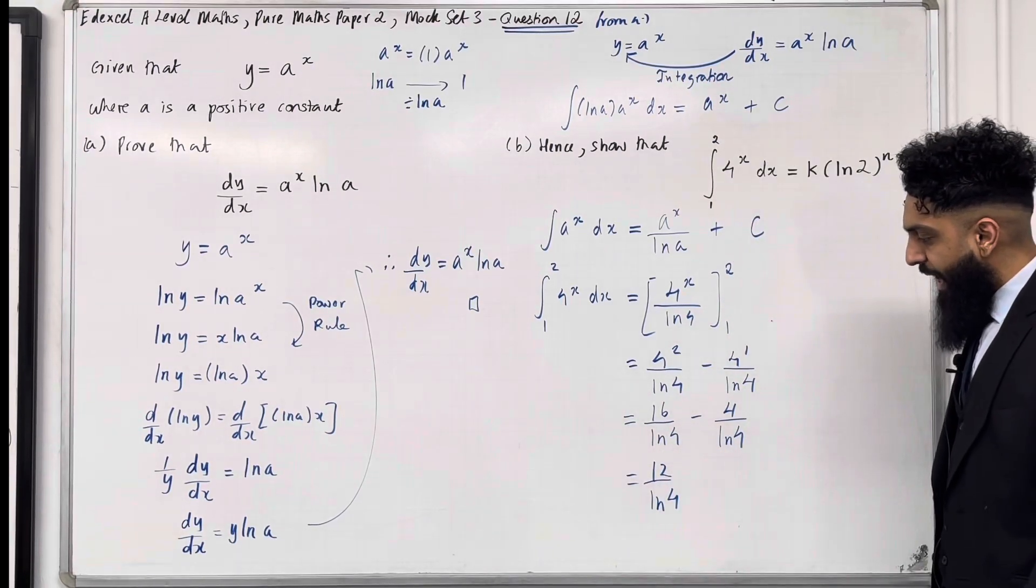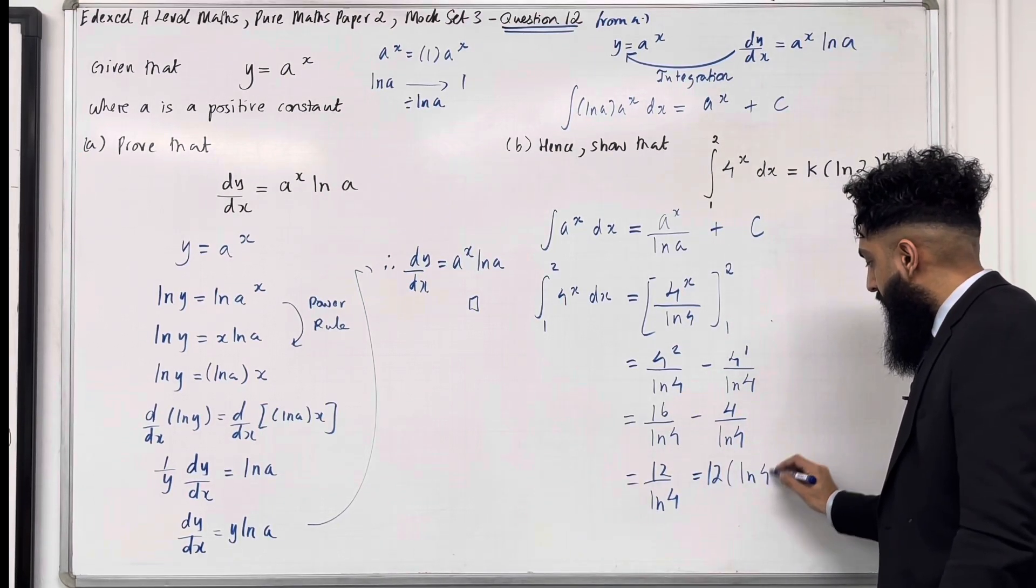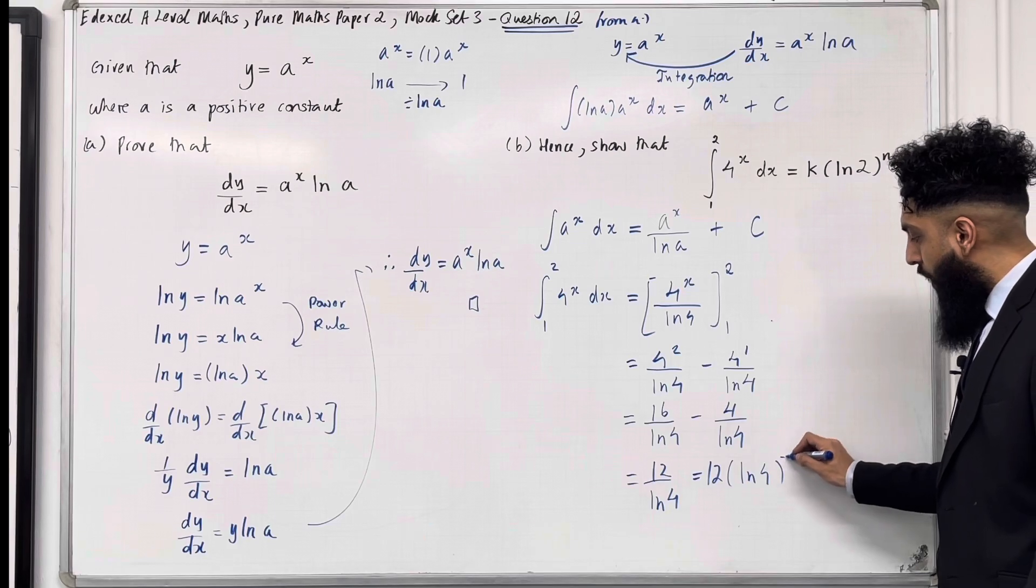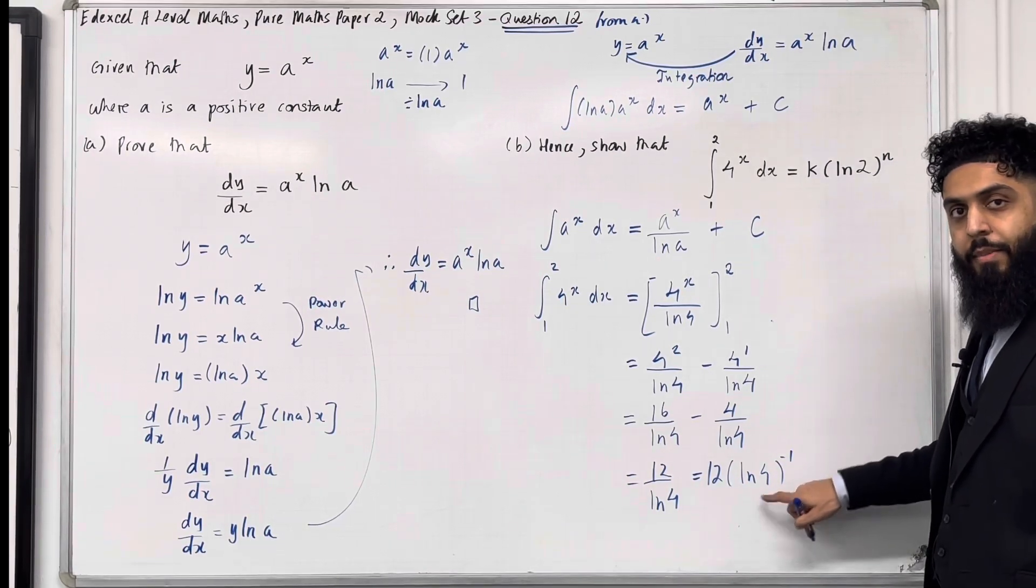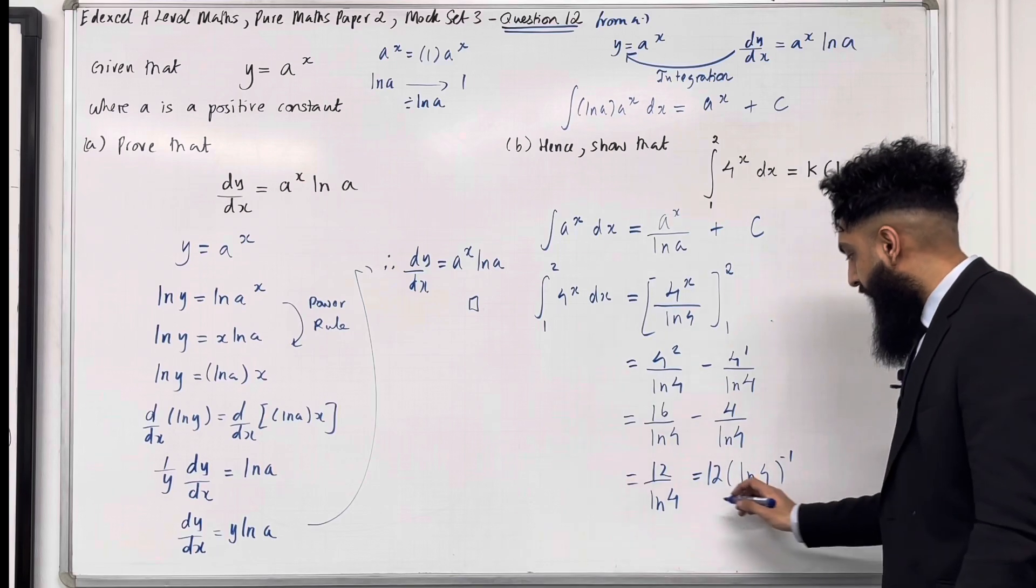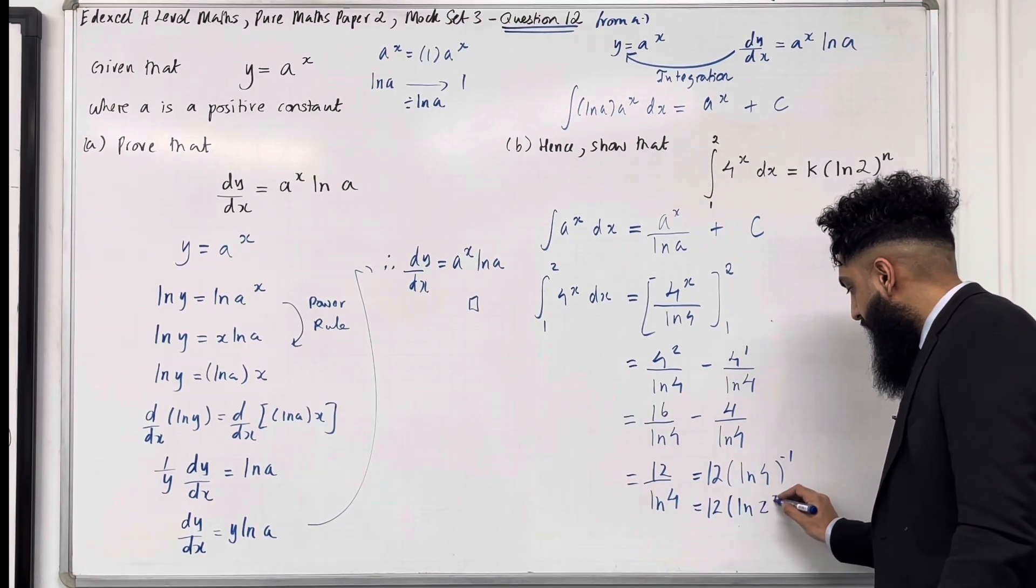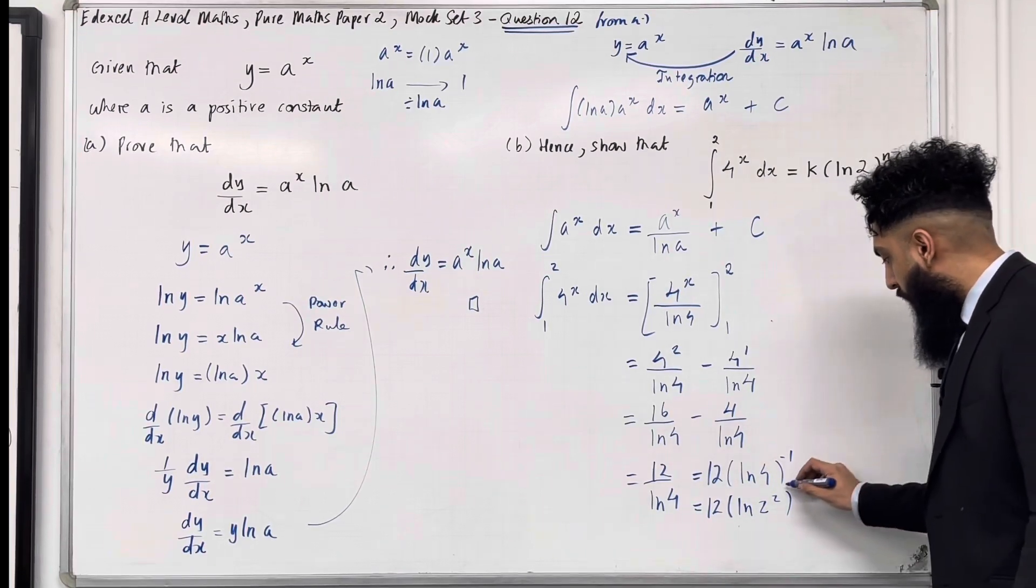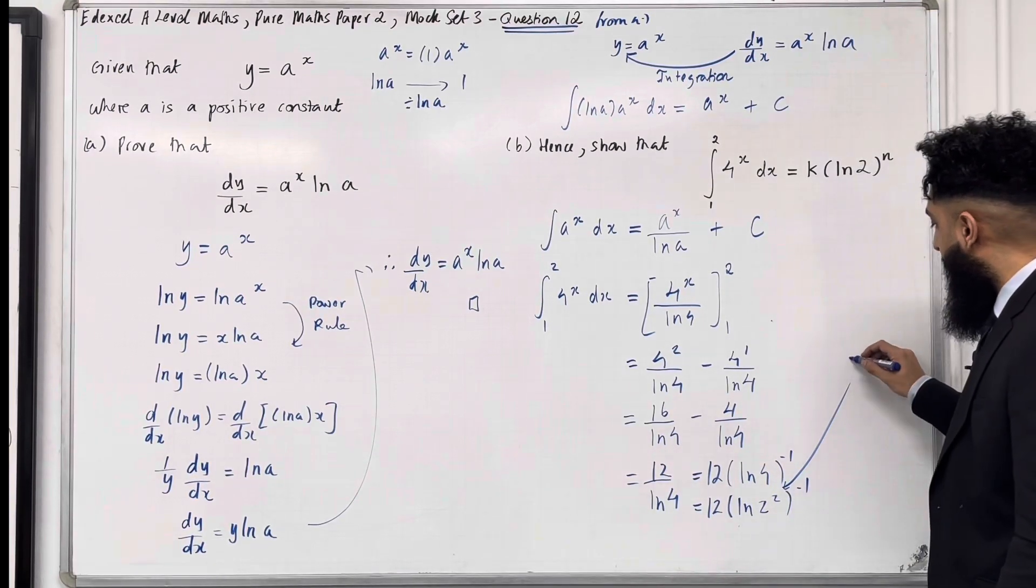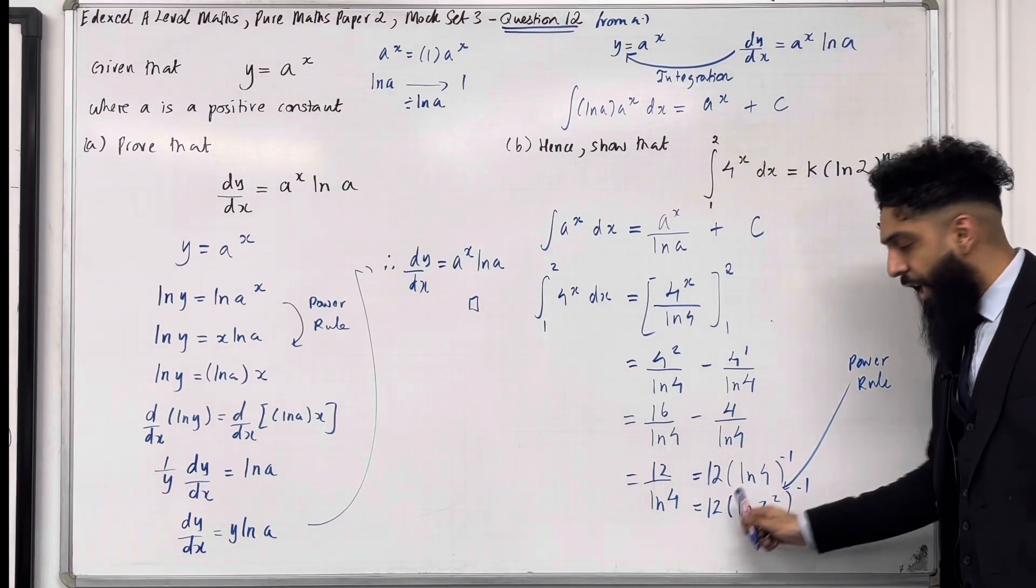Okay, so what I can do is I can bring the ln 4 up, but in bracket I'm going to have a power minus 1 on the outside. Now 4 is the same as 2 squared. So I've got 12 ln 2 squared, this in bracket to the power minus 1. So over here what we can do is use the power rule for logs to bring down the power 2.